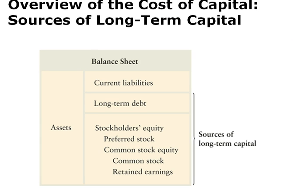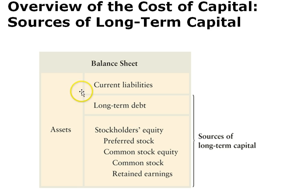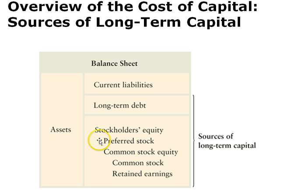Let's look at an overview of the cost of capital and sources of long-term capital. We have long-term debt and shareholders' equity, which includes preferred stock, common equity, and common stock. Preferred stock is a type of stock where a guaranteed dividend is paid. Common stock equity and common stock are essentially the same—regular stock. Retained earnings is the money the company makes but does not spend on assets. Each of these has its own cost of capital and its own method of calculation.